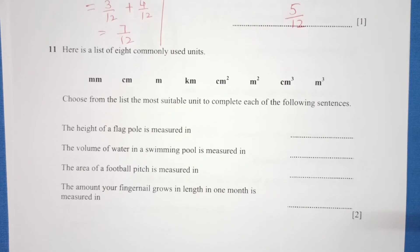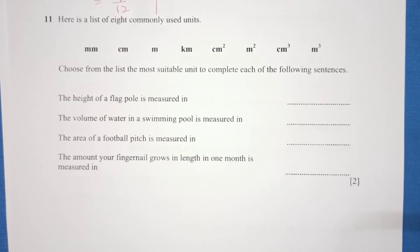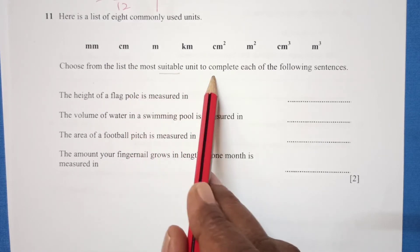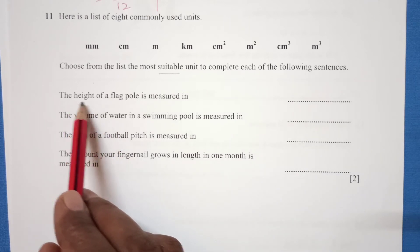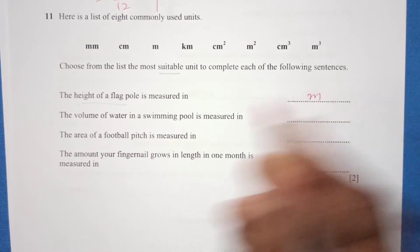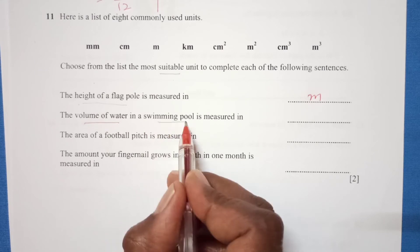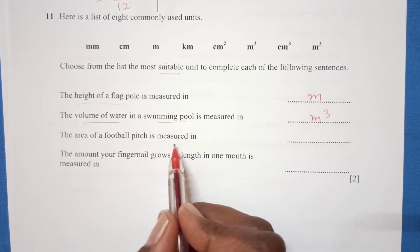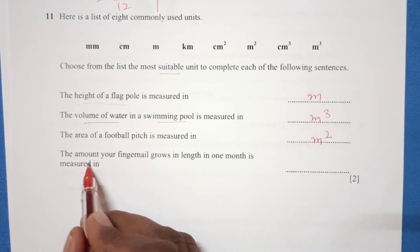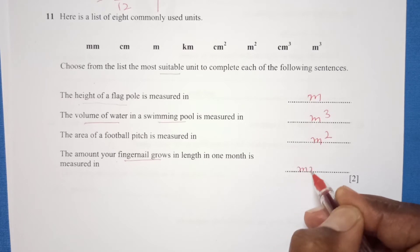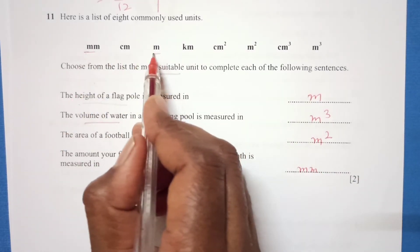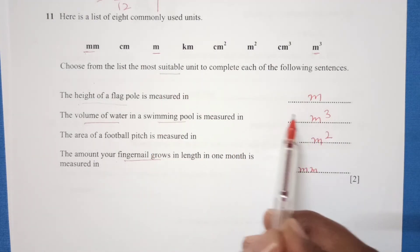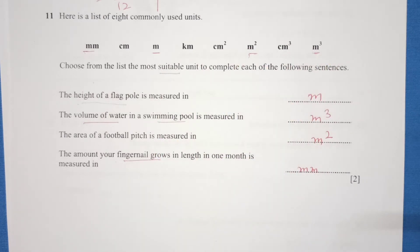Question 11: Here is a list of eight commonly used units. Choose from the list the most suitable unit to complete each sentence. The height of a flag pole: meters. The volume of water in a swimming pool: meter cubed. The area of a football pitch: meters square. The area of your fingernail: millimeters, because fingernail is smaller.